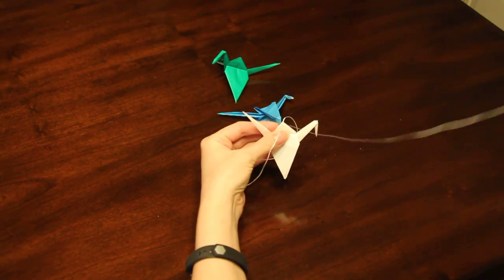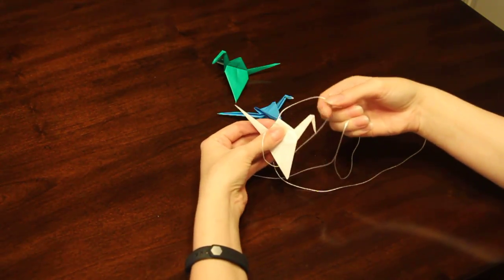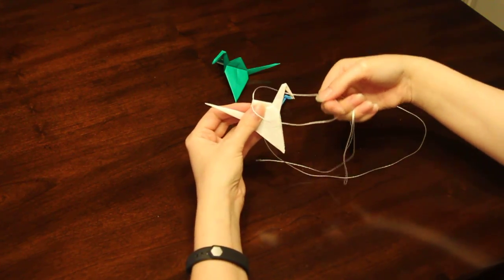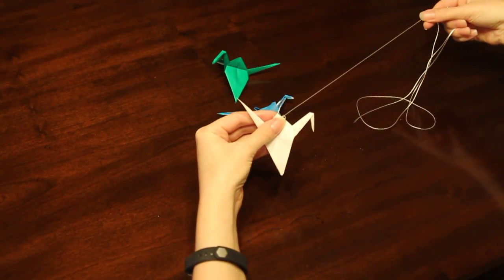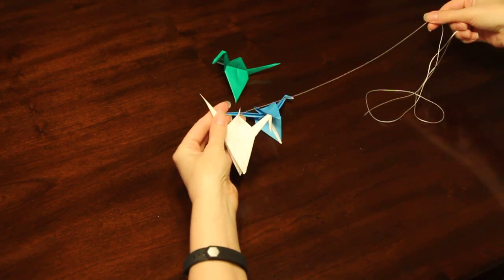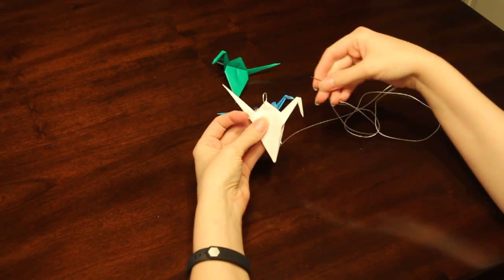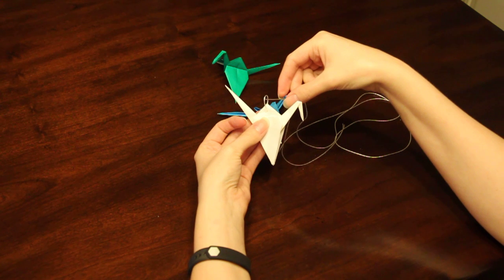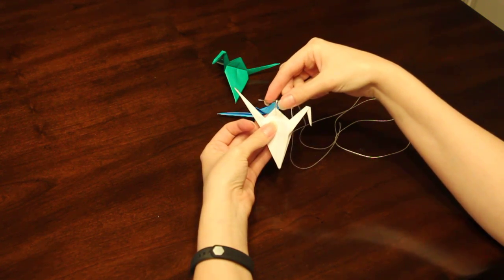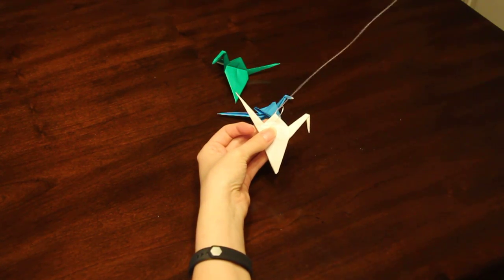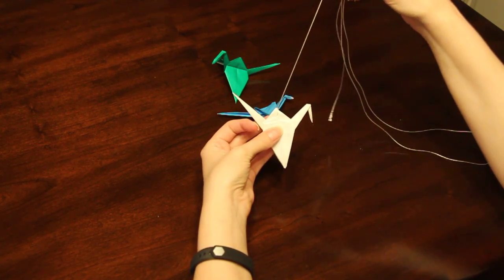Pull the string through, and then before it closes all the way, you want to take and put your needle back through that loop, and then you'll pull it tight just like that.